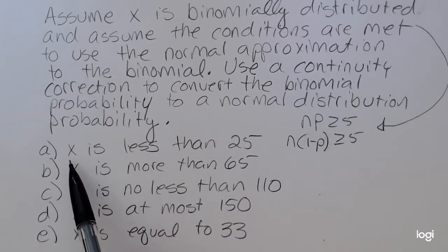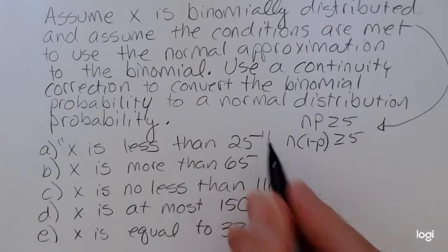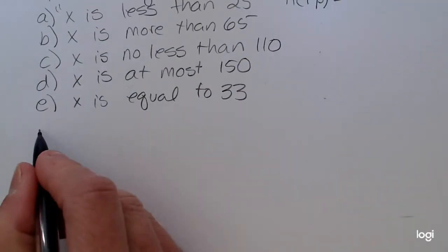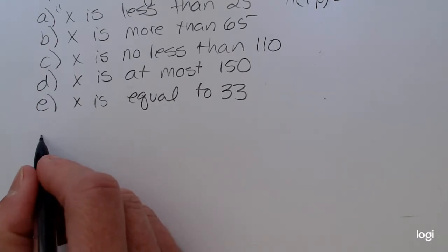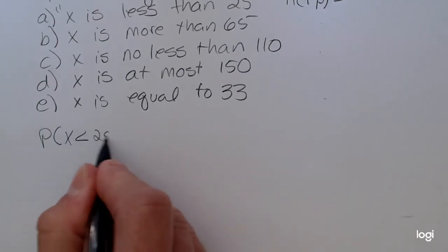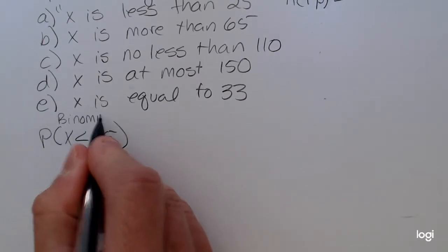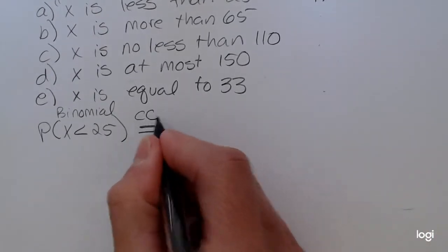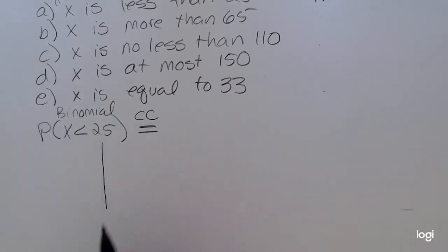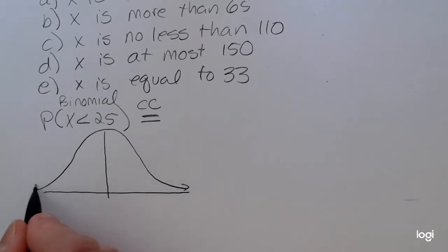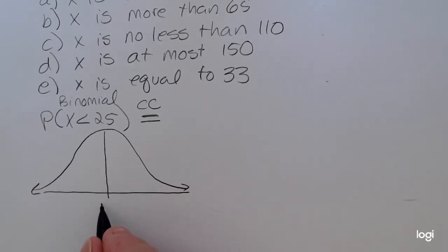My first example is x is less than 25. Starting with x being binomially distributed, as a probability expression in terms of a binomial distribution, x being less than 25 does not include the 25. So this would be expressed as P(x < 25) when x is binomial. To go to the normal distribution, we're going to apply a continuity correction. The conditions are met to use the normal approximation, so we're treating this as bell-shaped, and we'll have the mean — the mean for the normal distribution will be n times p.